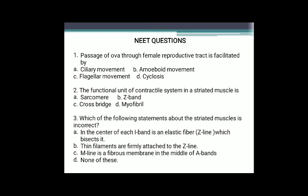Question 3: Which of the following statements about striated muscles is incorrect? Options: in the center of each I-band is an elastic fiber (Z-line) which bisects it; thin filaments are firmly attached to the Z-line; M-line is a fibrous membrane in the middle of A-bands; none of these. The answer is option D, none of these, because all statements are correct. A myofibril has dark A-bands with H-zone at center and M-line, each I-band has Z-line at its center, and the part between two successive Z-lines is the sarcomere.